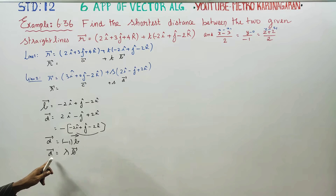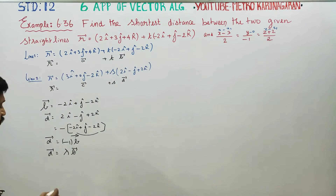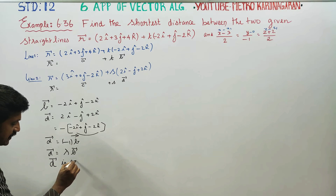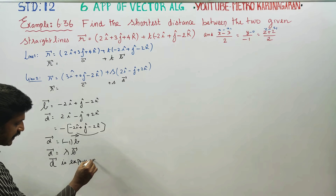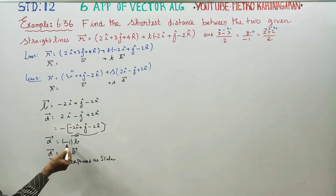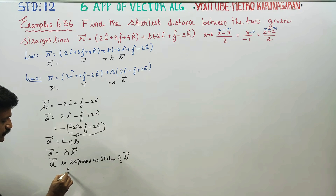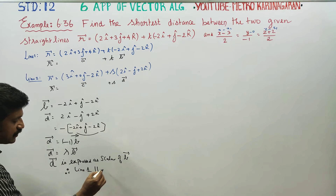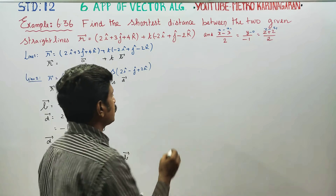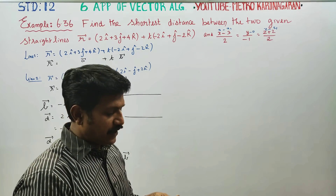The two vectors are parallel. Since D vector equals minus 1 times B vector, therefore Line 1 is parallel to Line 2. Line 1 and Line 2 are parallel lines. So the two lines are parallel.